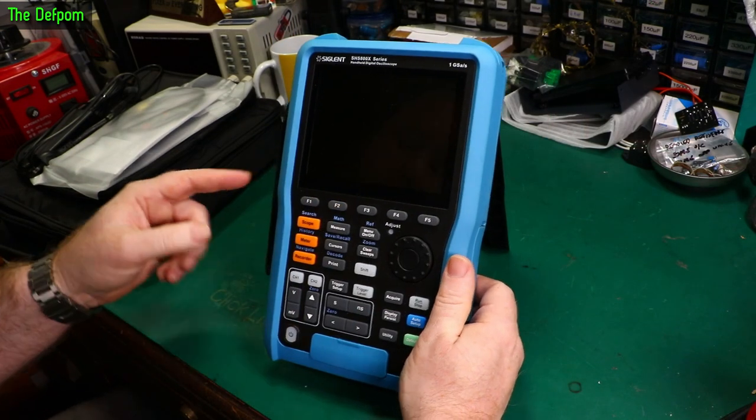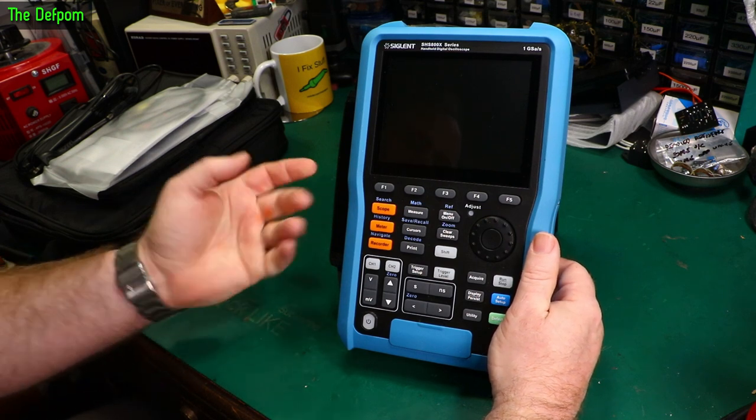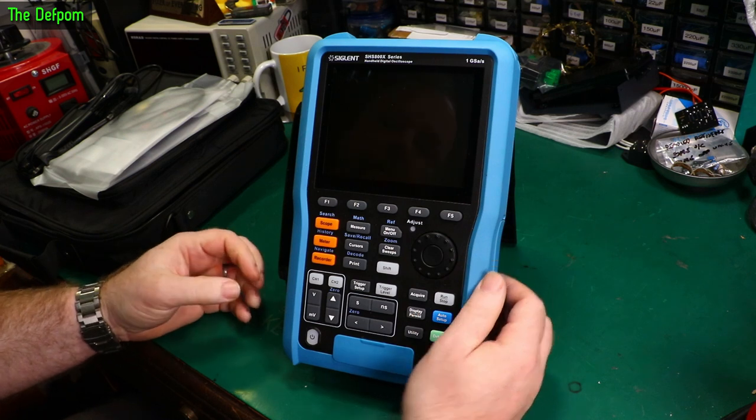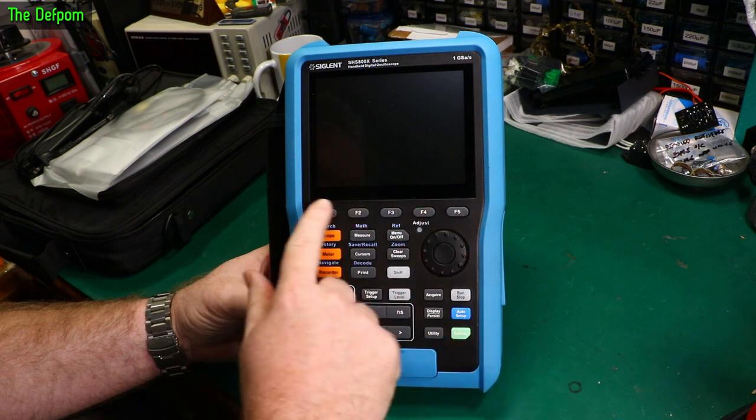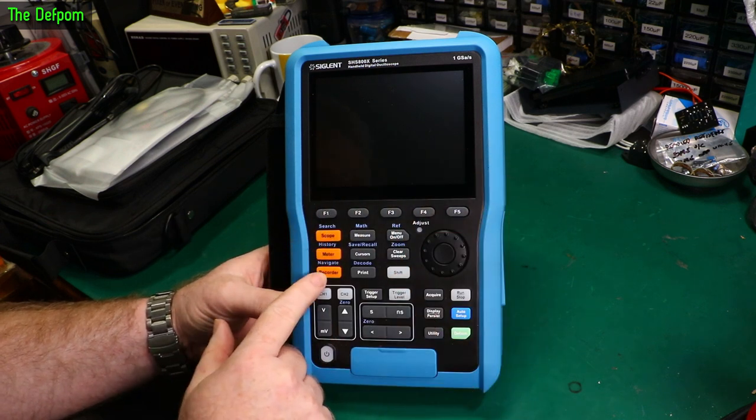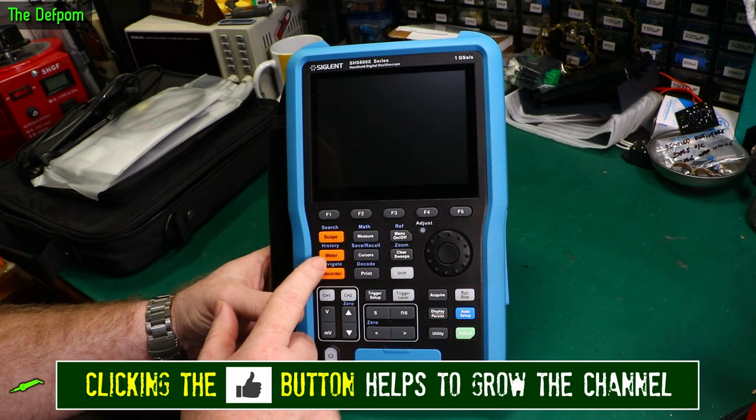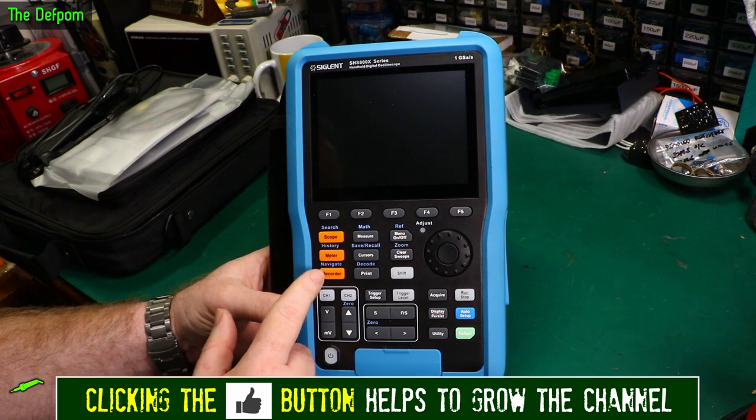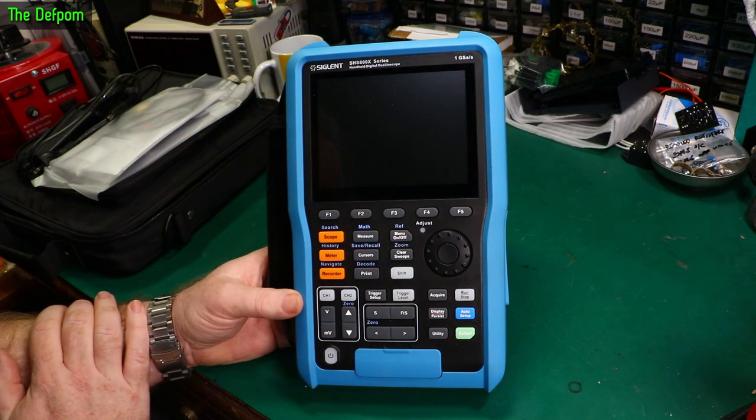Also for all my review videos, don't forget to like. And also subscribe if it's your first time here and you're not actually subscribed yet. You might see more stuff if you're interested in. So a quick look at the front panel, then we'll power it up. So we've got some F buttons across the bottom here, which obviously relate to the screen. We've got scope, meter and recorder options. So obviously scope is oscilloscope. Meter is the multimeter function. And recorder is a data recorder option.